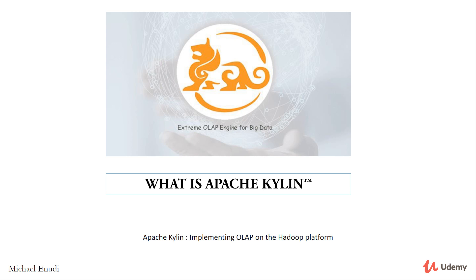You can find more of this information from the Kylin Release Announcement web page at eBay — the link to that page is available from the resource section of this course. In general, Kylin offers sub-second query latency on billions of rows and provides ANSI standard SQL availability to those using SQL-compatible tools.